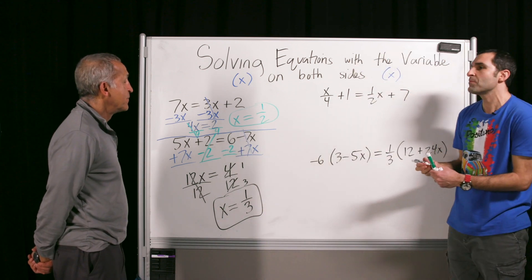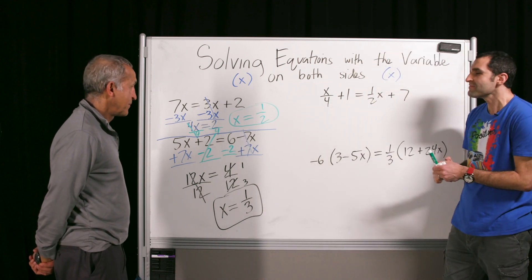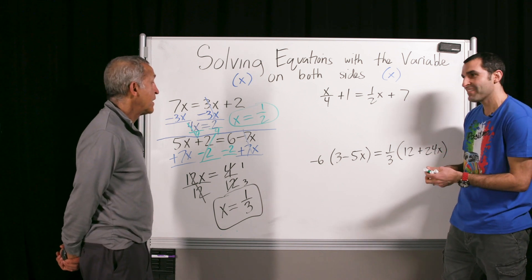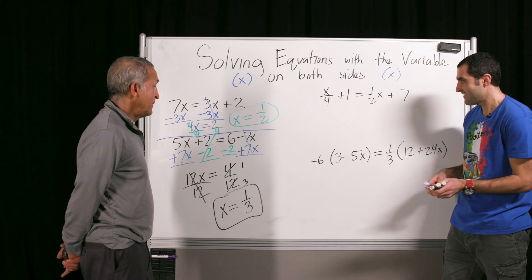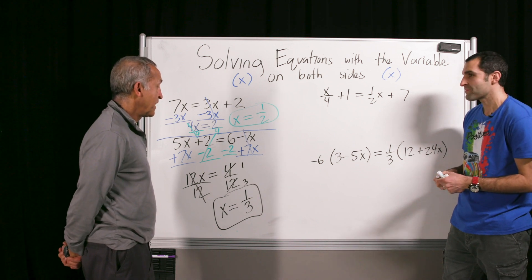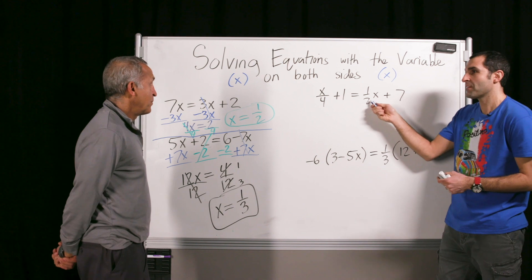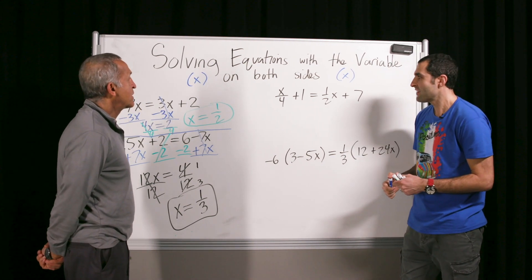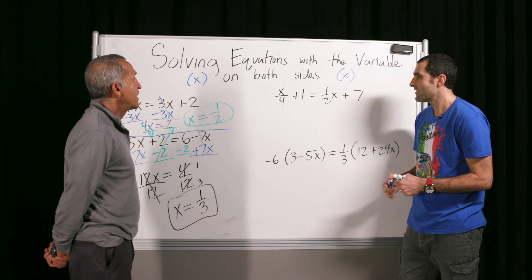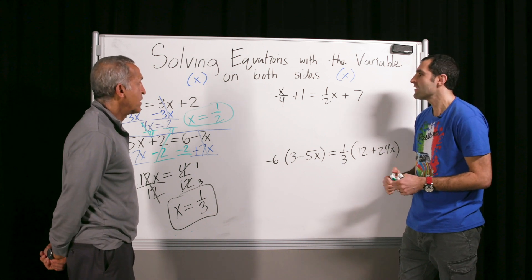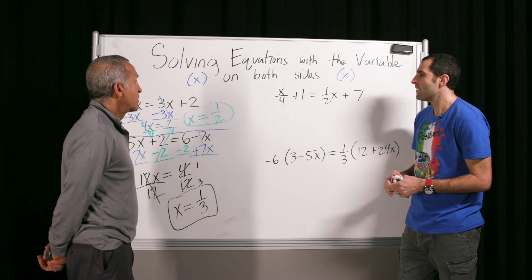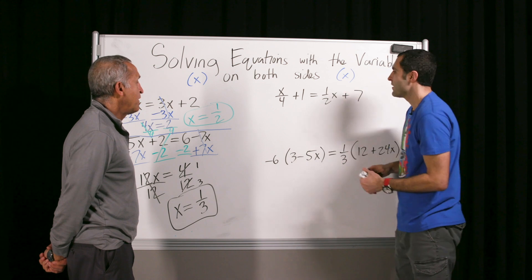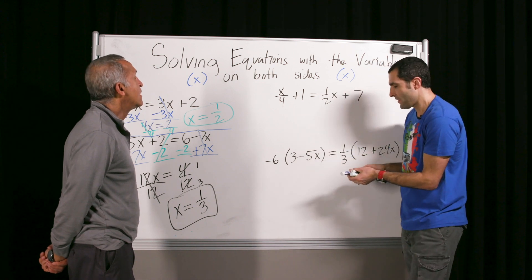Let's solve algebraically. What would you do to both sides? There are many ways to do that. You could still move the x's to one side and numbers to the other. Would you like to bring the x's to the left side? Or to the right? Let's do minus half x on the left side.